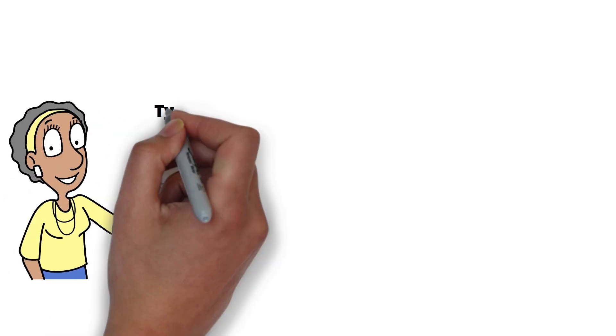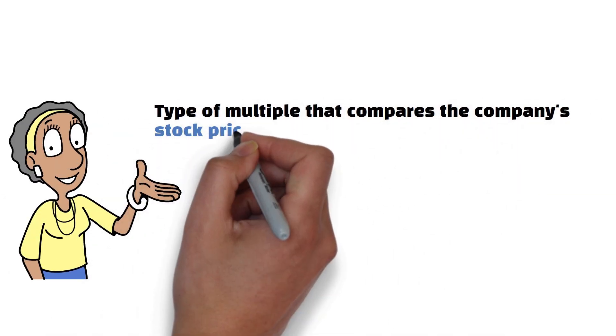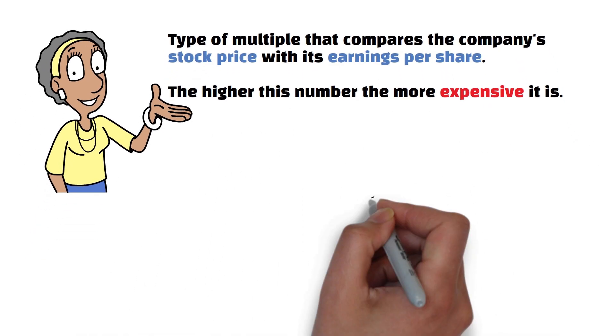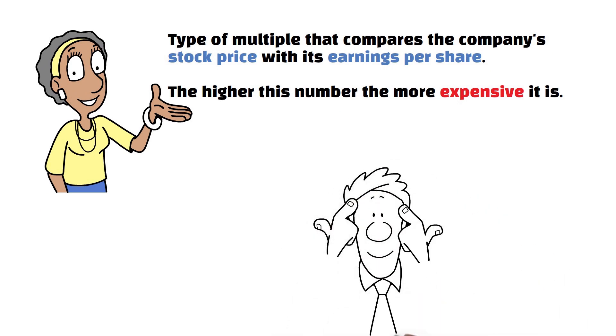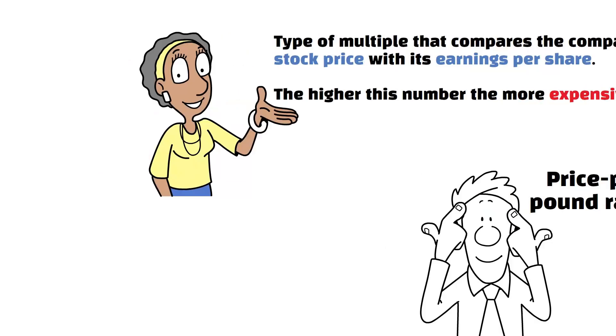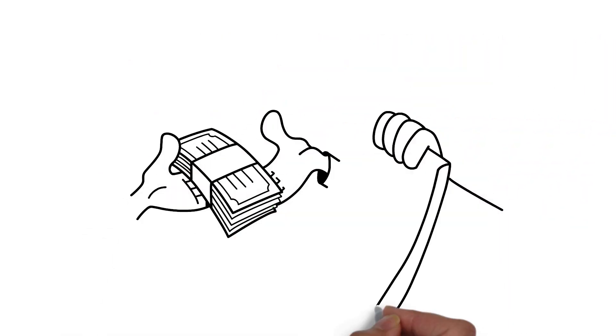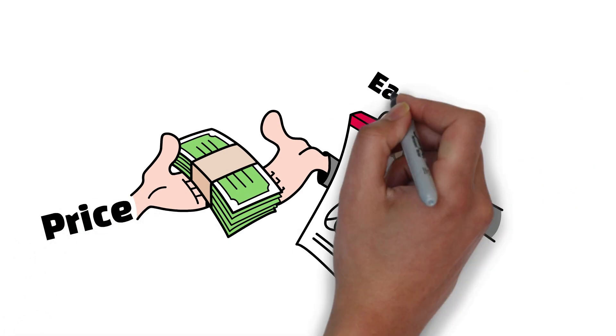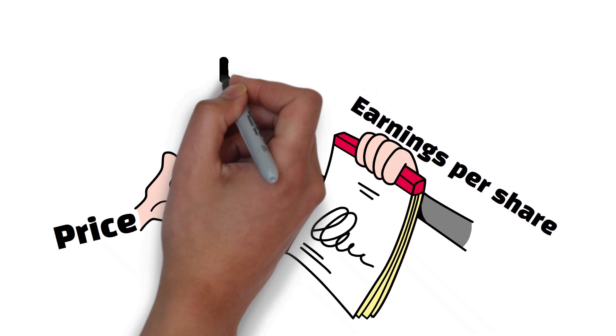The P-E ratio is a type of multiple that compares the company's stock price with its earnings per share. The higher this number is, the more expensive it is. By placing the price of the stock against the earnings per share, you can compare how much people are willing to pay for a share to make a more informed decision.